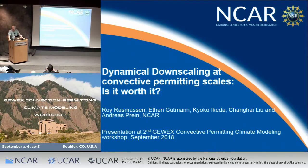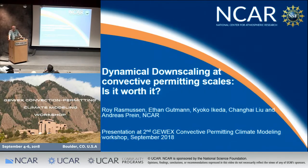One of the questions I get whenever I talk to folks wondering about what we're doing with convective permitting scales is: is it really worth it? Why can't we just use statistical downscaling or some other hybrid methodology?